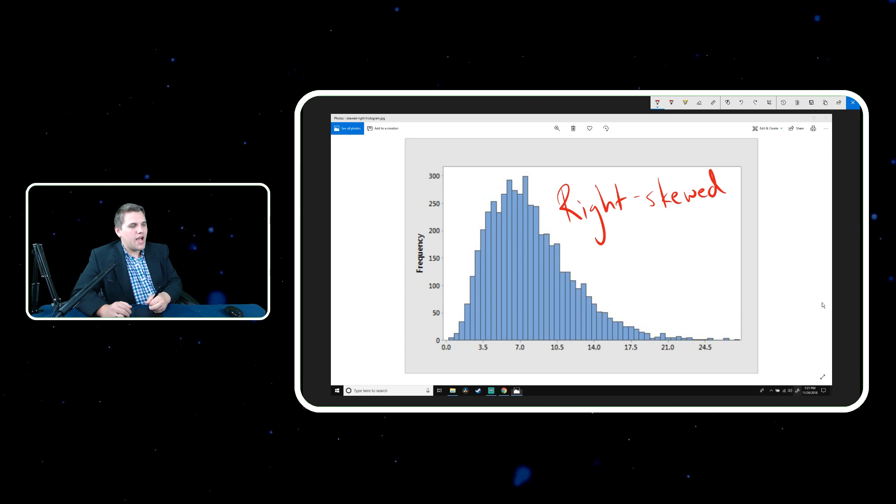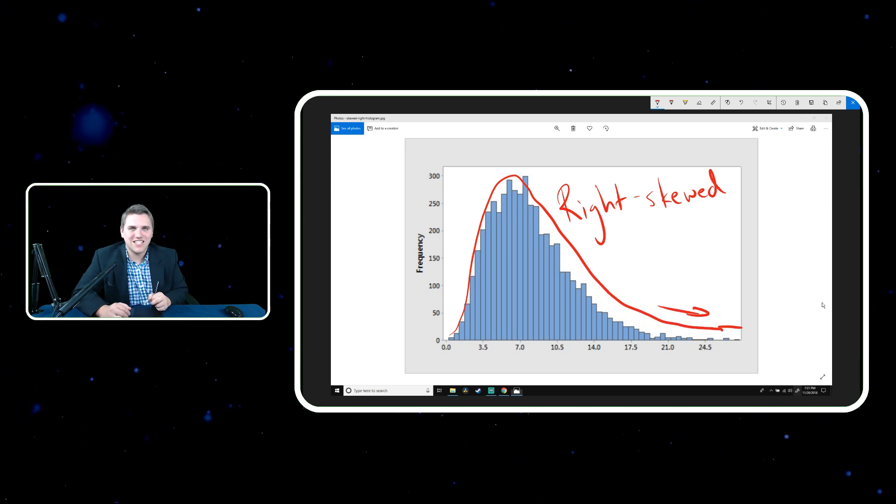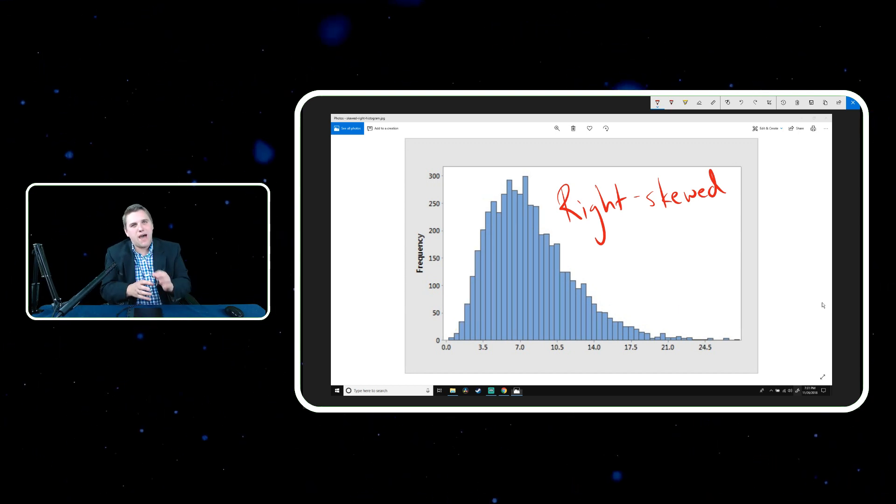The idea is skewness follows the tail. In this case, we have basically this curve that looks something like this, and we have this tail over here. That tail is where the skew is, so we would call this right skew. You kind of have to think backwards. If we literally flip this image, it would be left skewed.